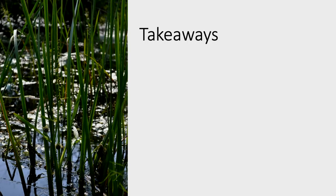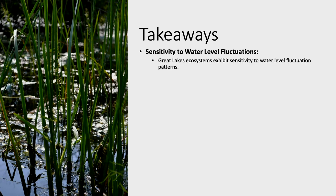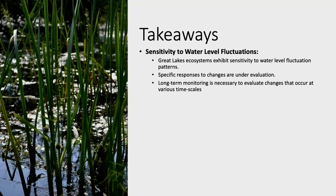Some key takeaways: Great Lakes ecosystems are sensitive to water level fluctuations. When looking at water level regulation plans, we want to see specifically what matters most for changes in water level fluctuations. We are not assuming changes will happen simply because they were hypothesized — we need data to actually see what's happening. The only way we can really do that is with long-term monitoring to capture changes that may happen on different time scales.